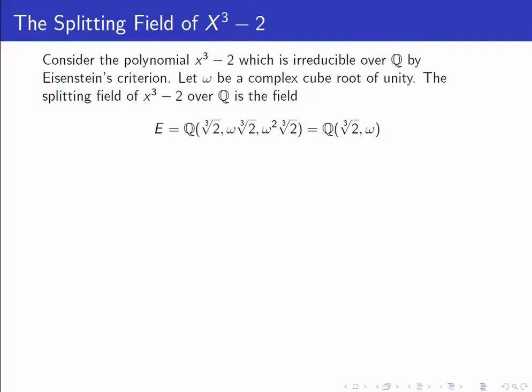Let's look at the splitting field of x cubed minus 2 over the rationals. We know this polynomial is irreducible by Eisenstein's criterion. Let omega be a complex cube root of unity. Then we know that the roots of x cubed minus 2 are just the real root and that root times omega and omega squared.